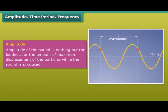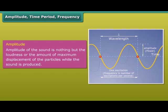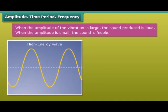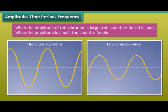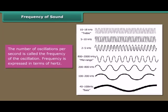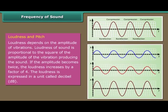Amplitude of sound is the maximum displacement of the particles while sound is produced. When the amplitude of vibration is large, the sound produced is loud. When the amplitude is small, the sound is feeble. The number of oscillations per second is called the frequency of the oscillation, expressed in hertz. Loudness depends on the amplitude of vibrations. Loudness is proportional to the square of the amplitude — if the amplitude becomes twice, the loudness increases by a factor of four. Loudness is expressed in a unit called decibel (dB).